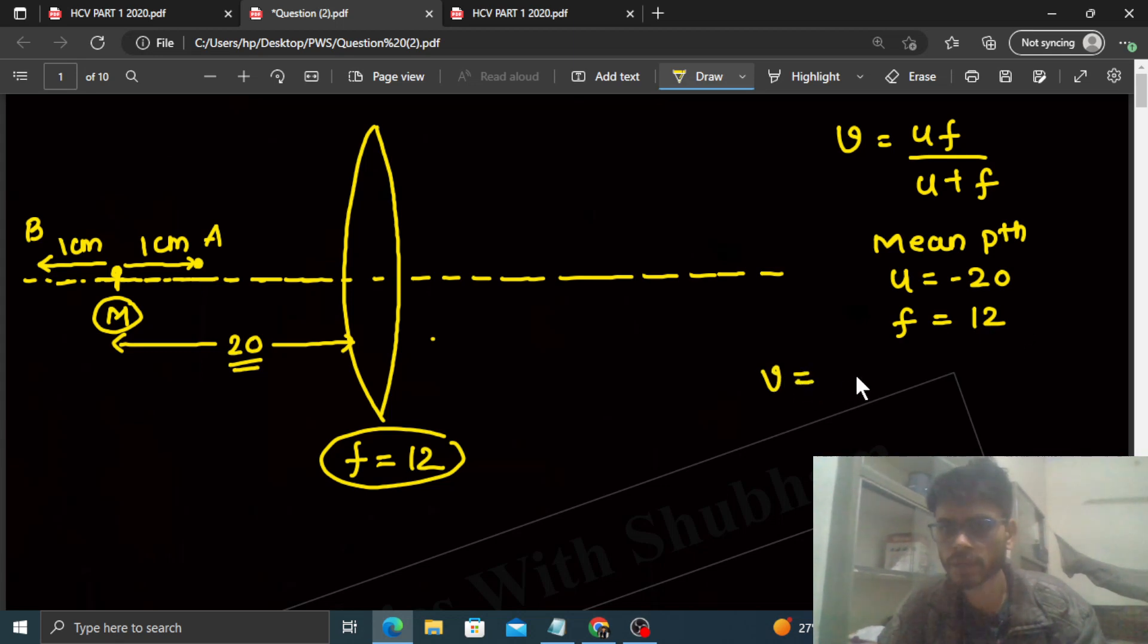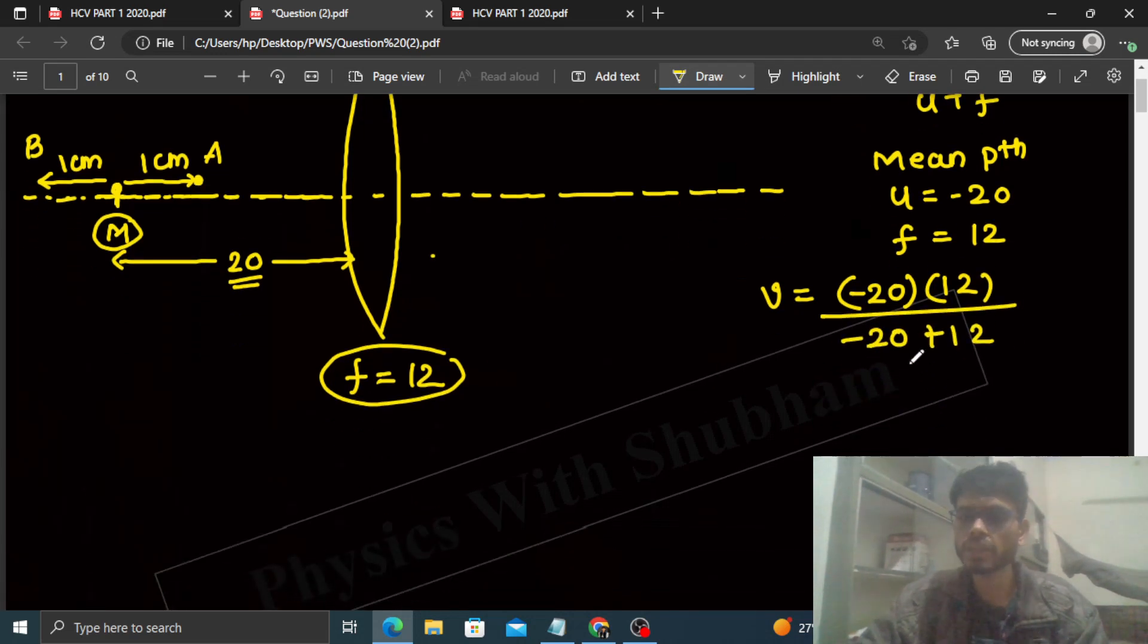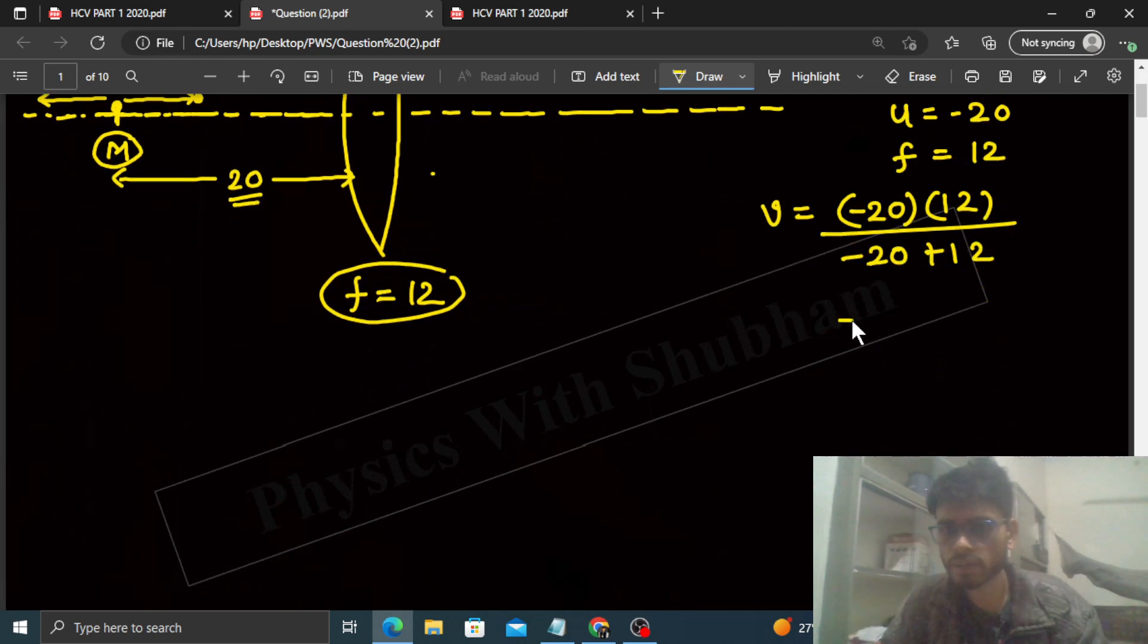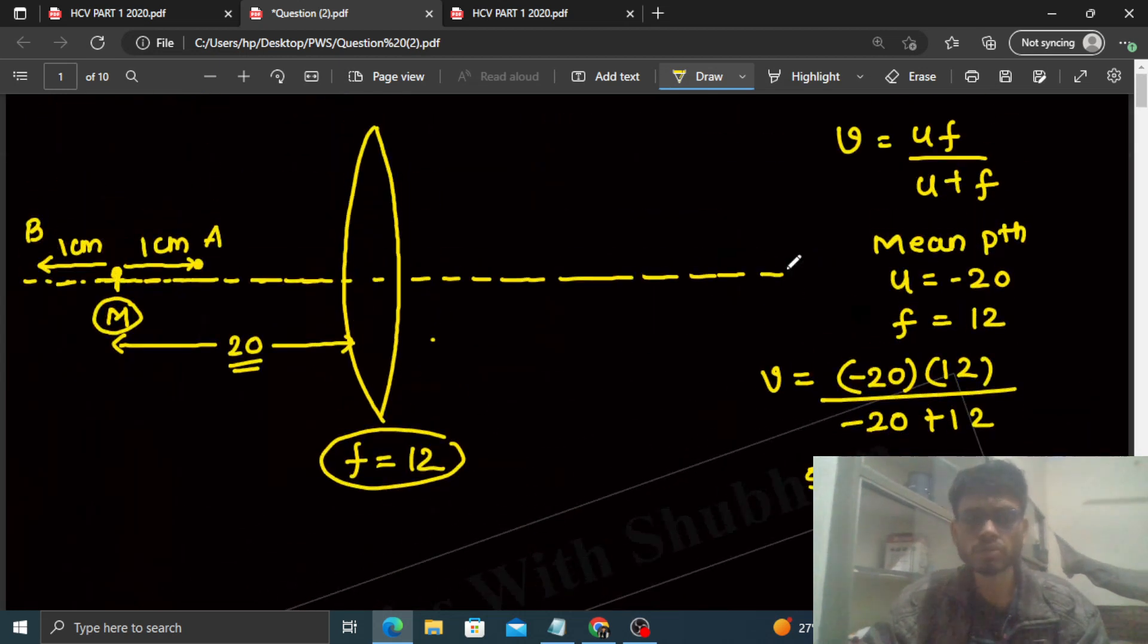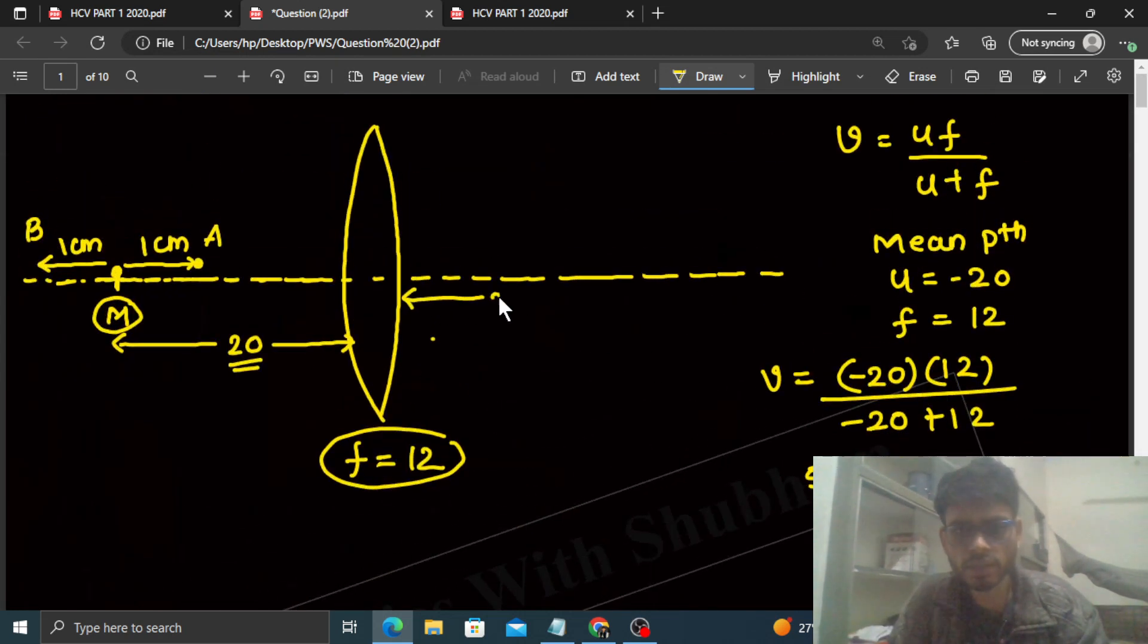So you can see the value of v will be minus 20 into 12 divided by minus 20 plus 12. You can easily solve it. Let's see how much it comes. This will be minus 20 into 12 divided by minus 8. Minus and minus cancel. Divide by 4: 2, 5, this becomes 6. So that is basically 30. So at 30, mean position - if we go from here at a distance of 30, the image mean position, let's say M dash, is the mean position of the image oscillation. The image of M will form at M dash.